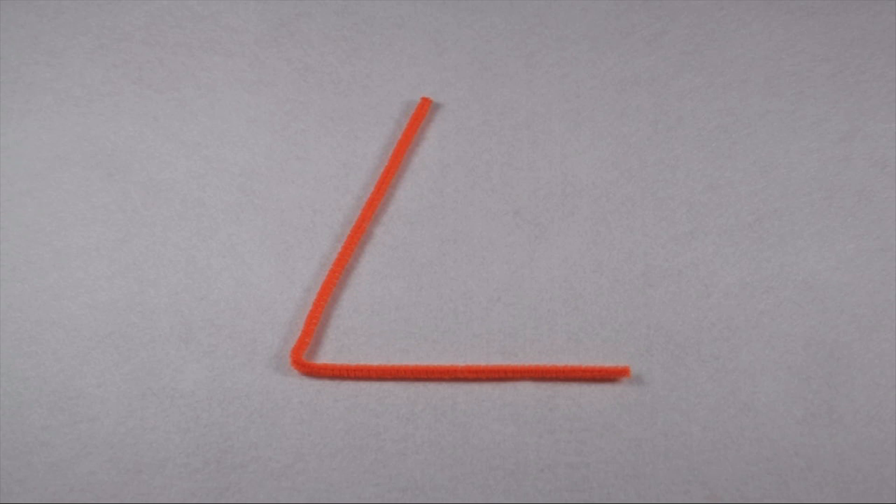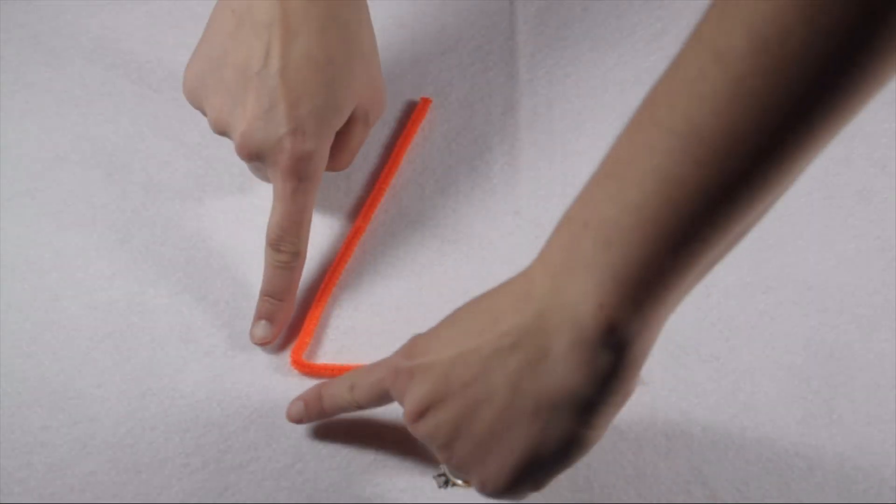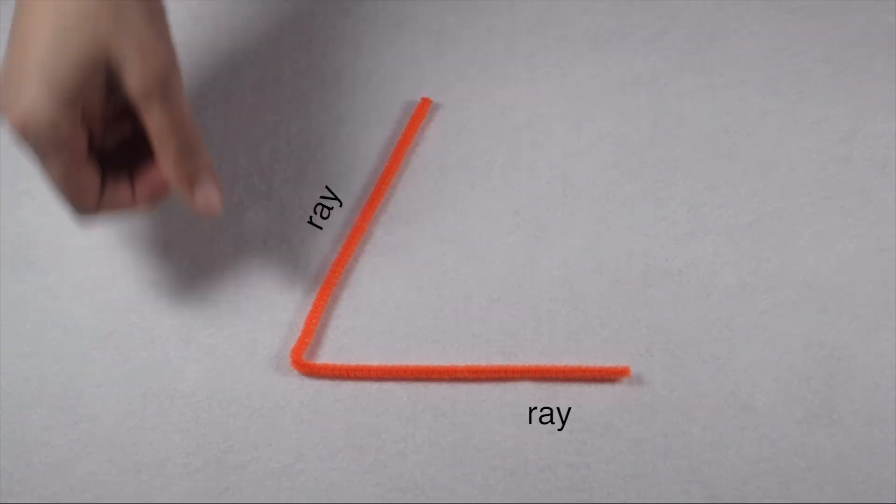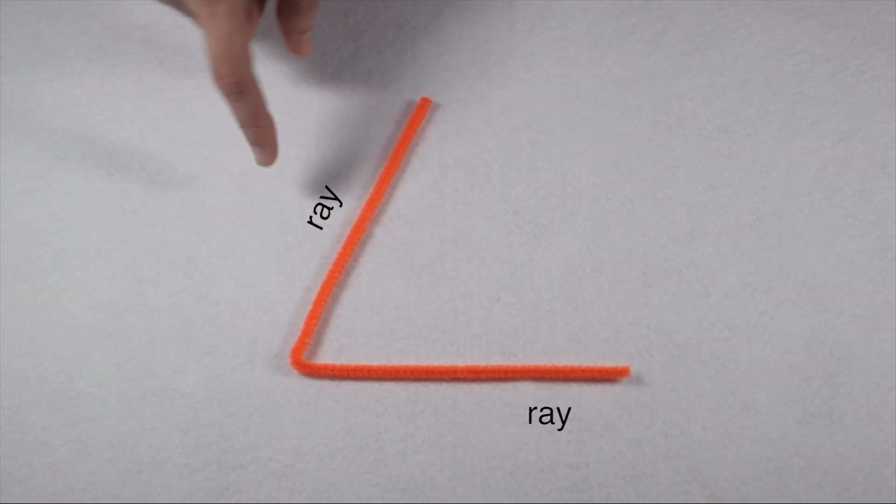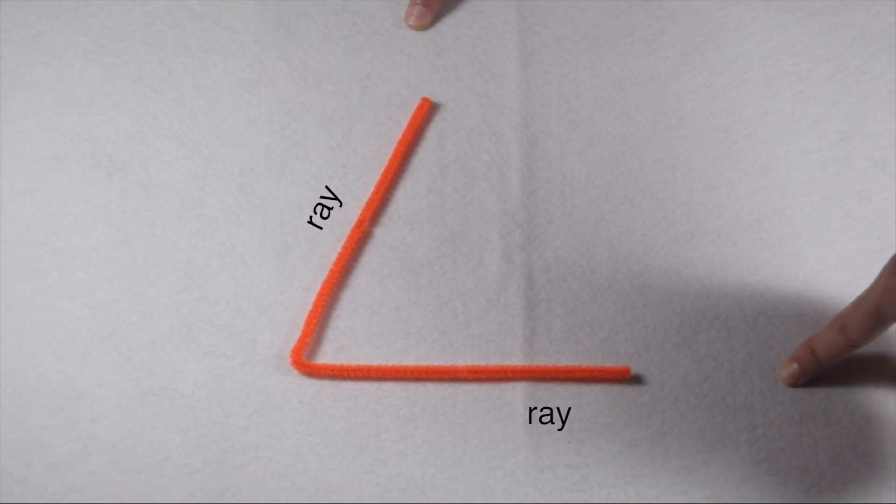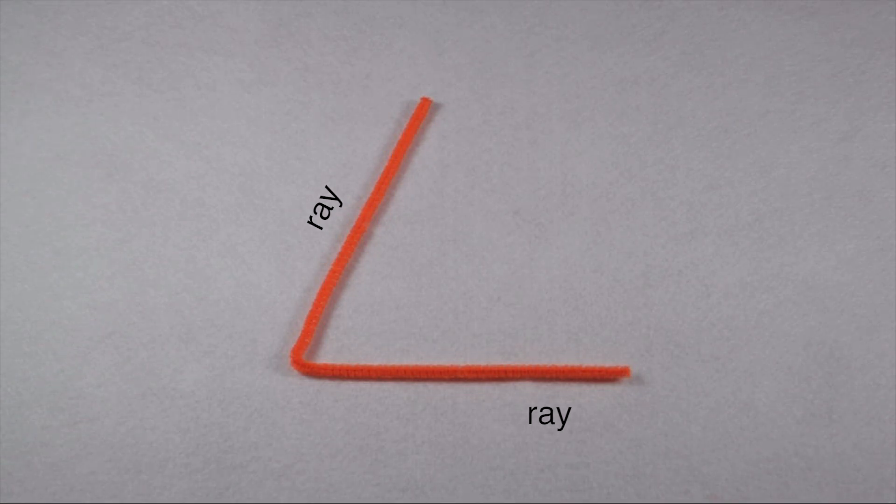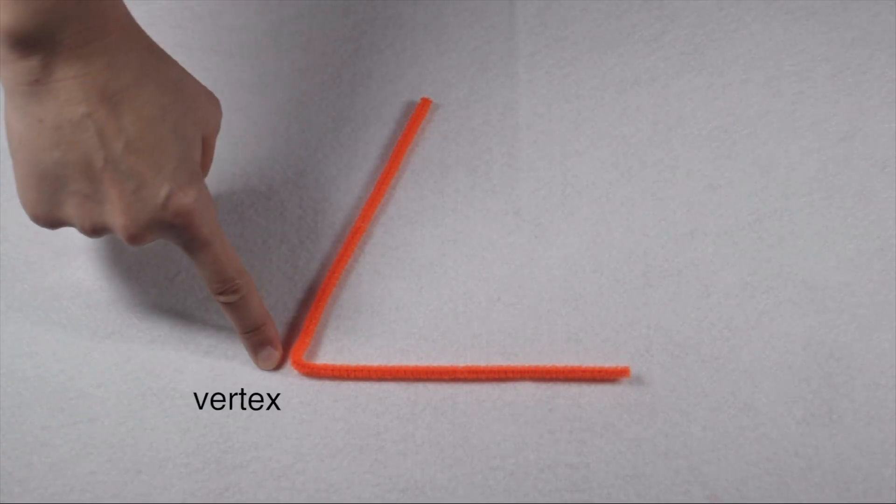We're going to start by looking at angles and naming and classifying them. When you have an angle, it's made up of two edges called rays. Rays have a defined starting point, but then they continue on forever in one direction. The point where your rays meet is called your vertex.